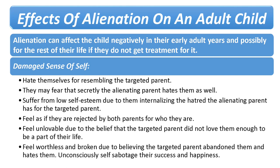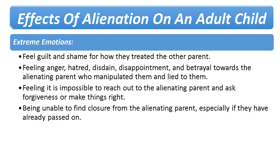Extreme emotions. As an adult they may look back at what they said and did to their other parent and feel ashamed and guilty, even if they do not know they were lied to and manipulated. If they do find out they were lied to, they can experience extreme guilt and shame for how they hurt their other parent. The child may find it hard or impossible to reach out to ask forgiveness, and not being able to get closure can haunt them for life. They may experience extreme hatred towards the alienating parent and reject or cut contact with them. If they cannot reconcile with the targeted parent, they may lose both parents.